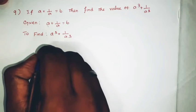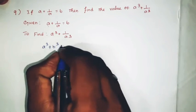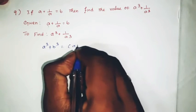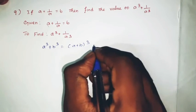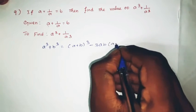The cube formula is: a cube plus b cube equals (a plus b) whole cube minus 3ab into (a plus b).